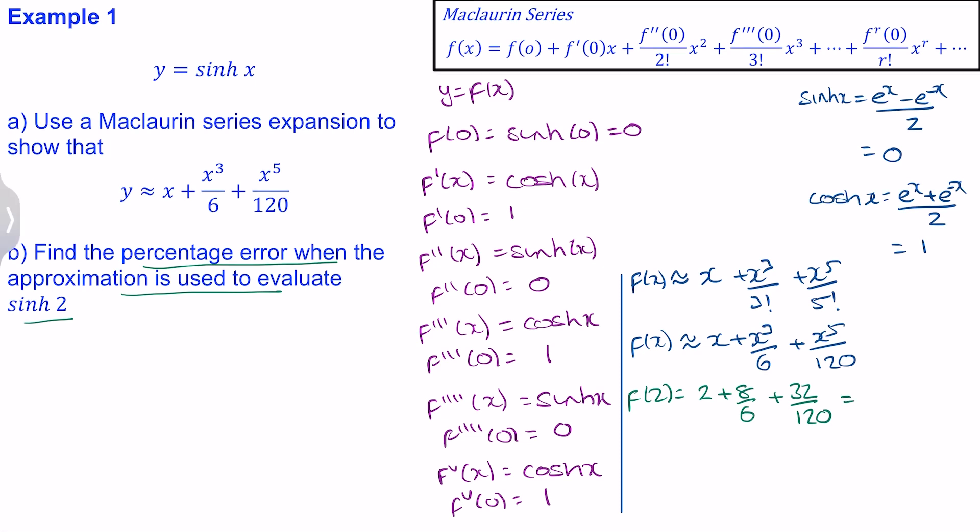And when we work this out, we get 3.6. If we were to work out the exact value of sinh(2), well this will be e^2 minus e^(-2) over 2. And this is 3.62686 to 5 decimal places.